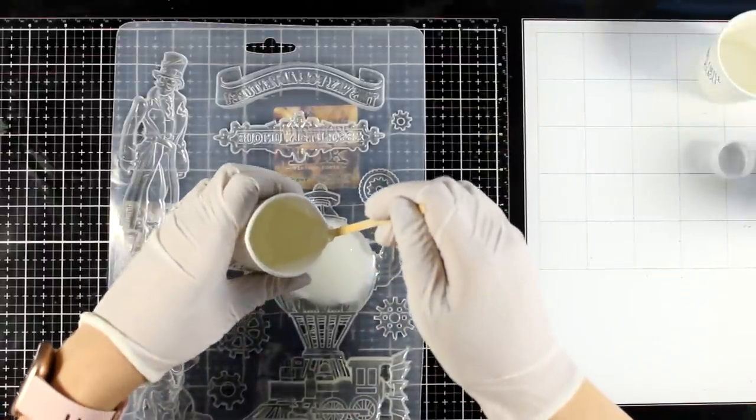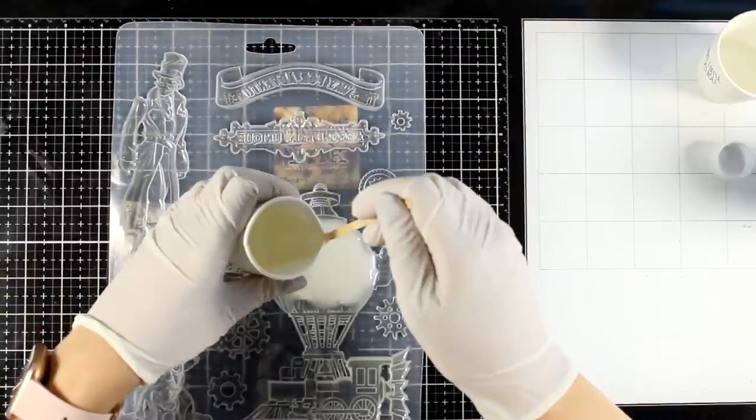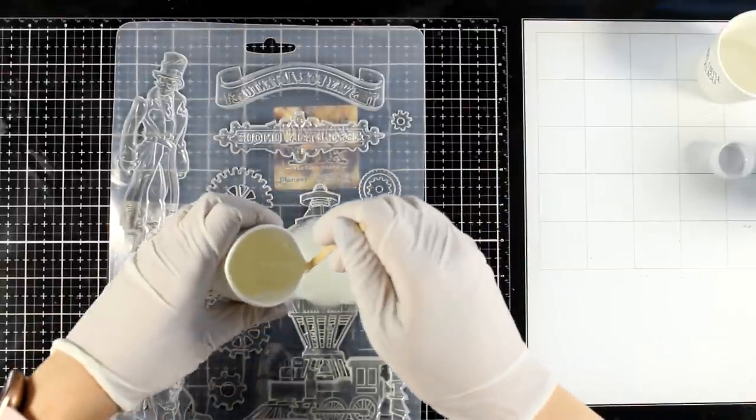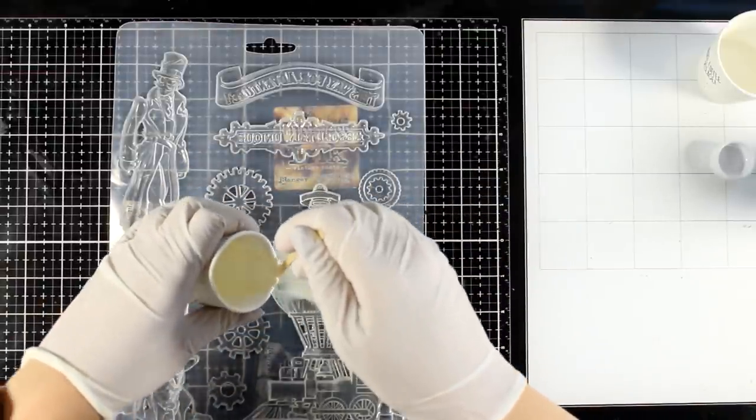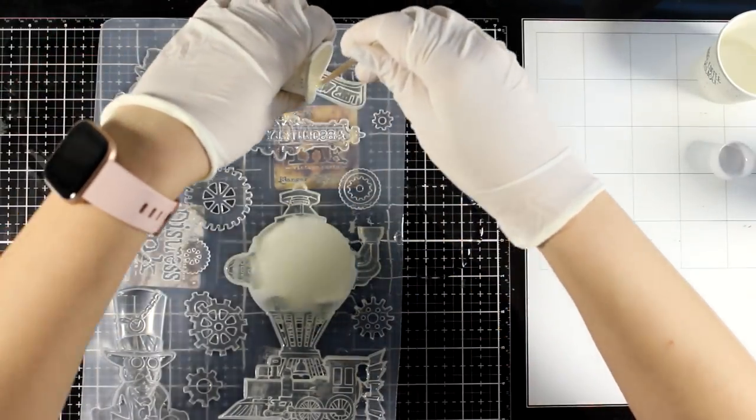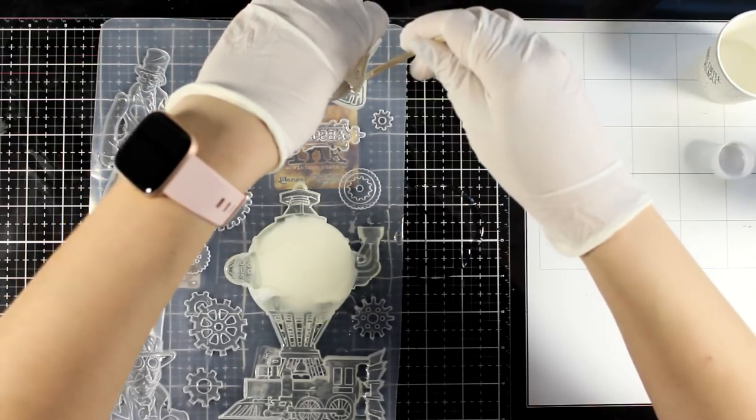I'm going to have to repeat the same process one more time and pour on top of that. By the time I did the mixing, the first one was already curing as you can see. I'm also going to pour on that label at the top as well as a couple of gears.